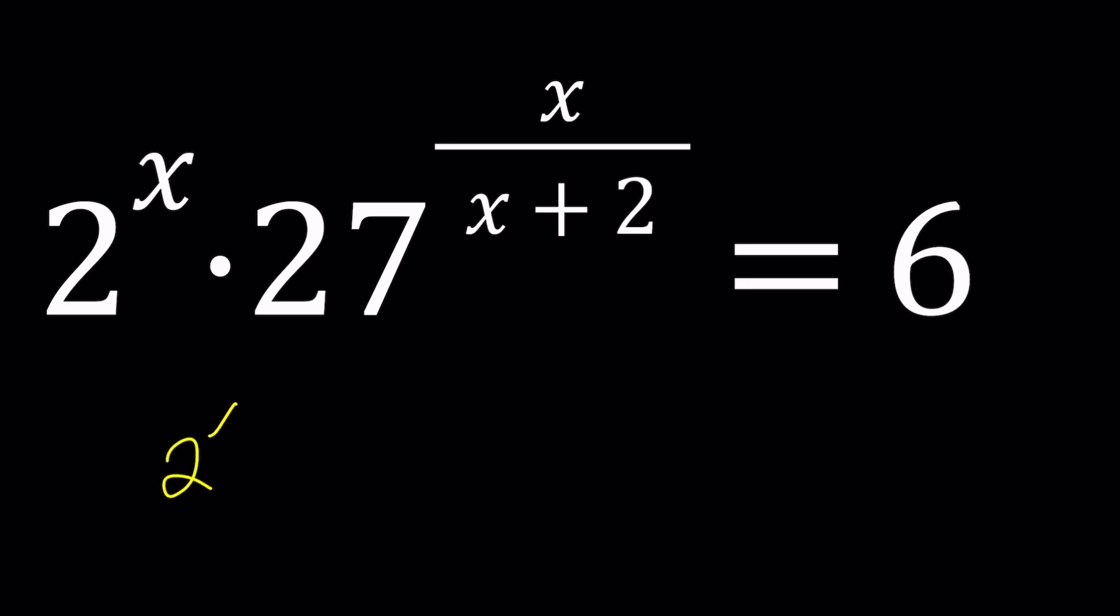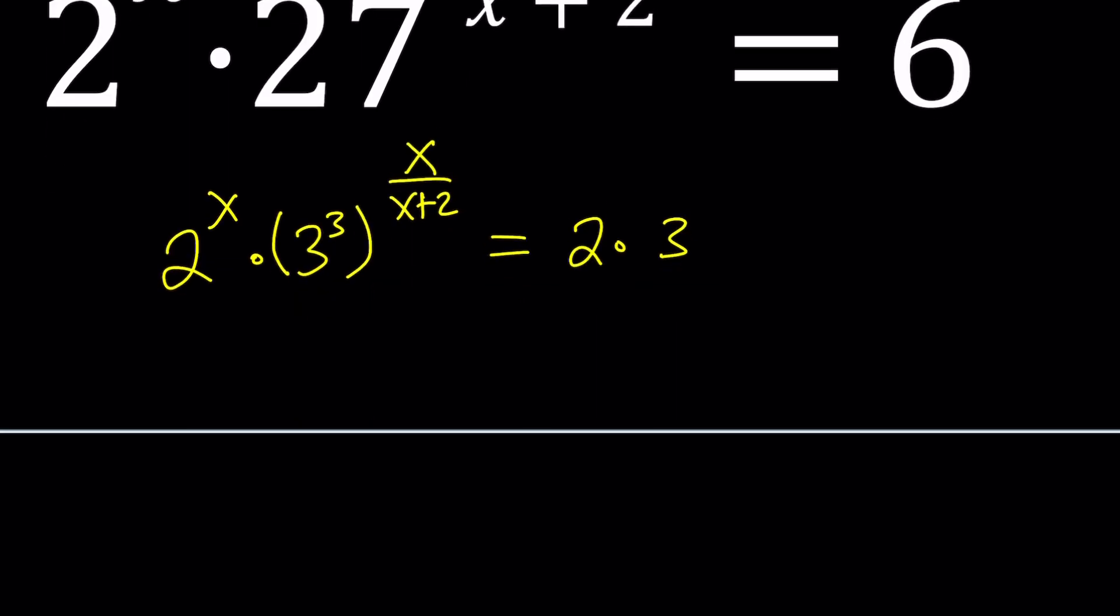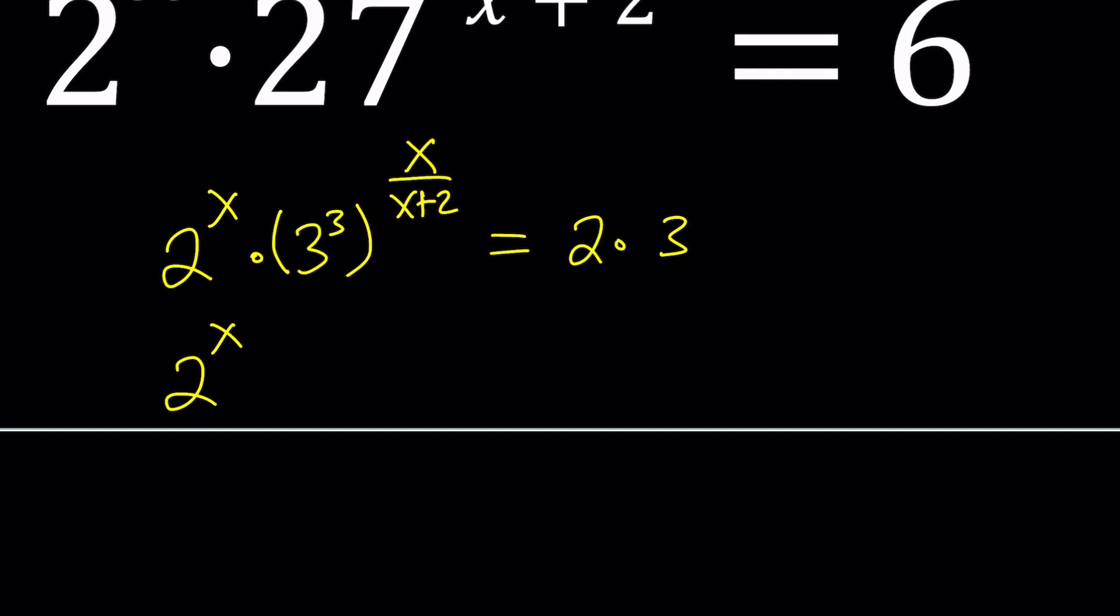Let's go ahead and factor what's on the right hand side. I'm going to write the 27 as 3^3 so that I can work with prime numbers such as 2 and 3. And I'm going to write the 6 as 2 times 3. And after using properties of exponents, this turns into 3^(3x/(x+2)) = 2 · 3.